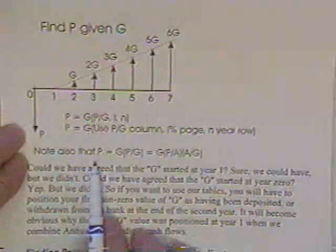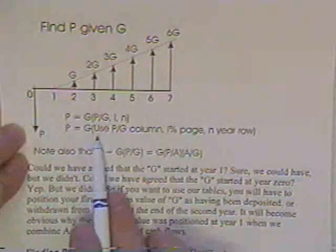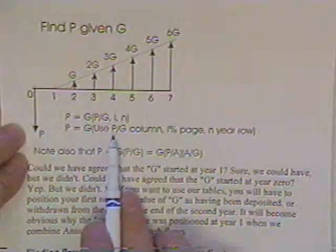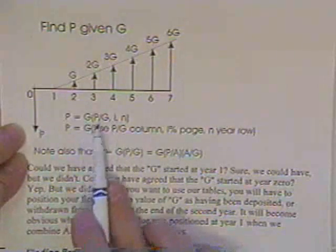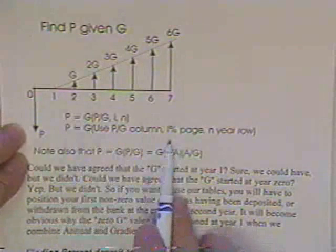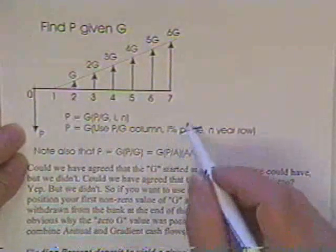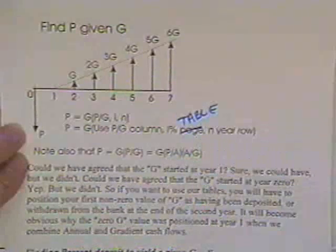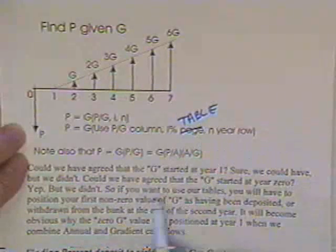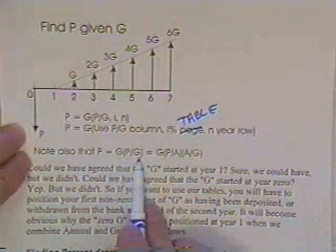Note also that you don't have to use these equations, you can use the P over G column if you're given the gradient to get P, in a percent table, in year row. Now then, also I believe that...